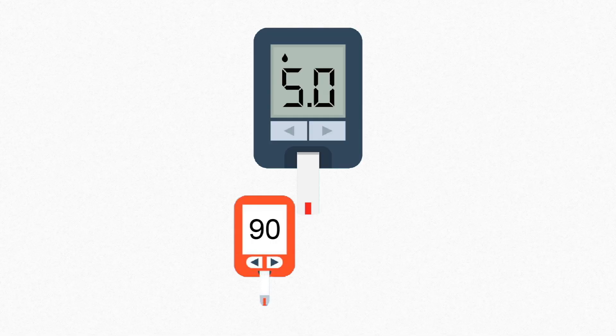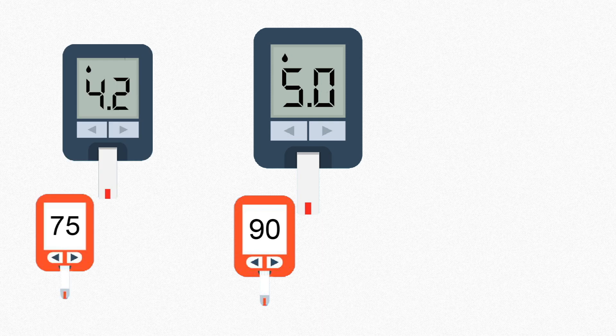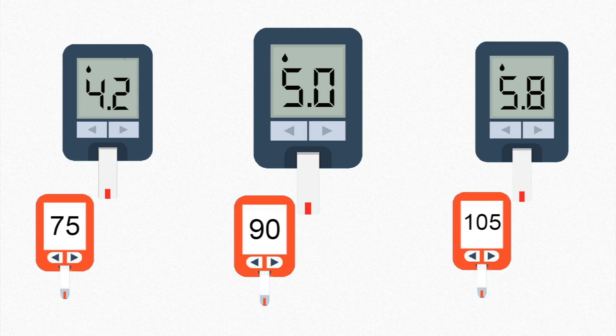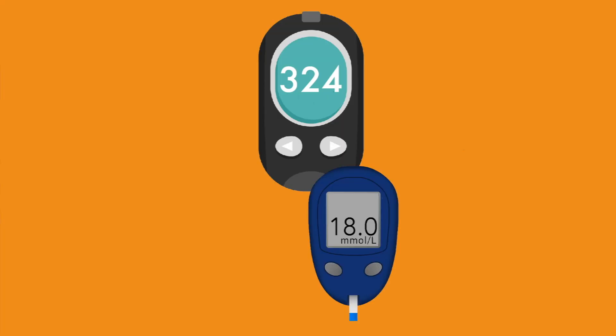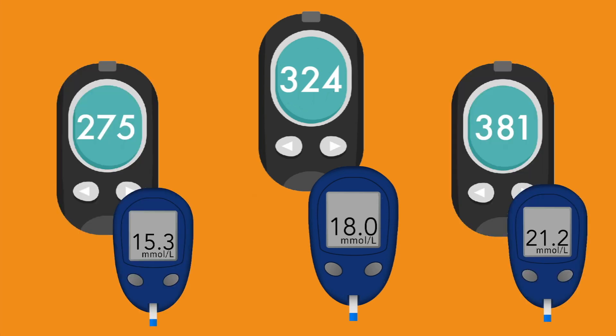So how does ISO define accuracy in blood glucose meters? Let's say you measure your glucose and your meter says that it's 5.0. The margin of error means that your actual glucose can be anywhere between 4.2 and 5.8. This margin of error increases as your glucose is higher or lower. So when your meter says you are 324 milligrams per deciliter, your actual glucose can be anywhere from 275 to as high as 381 milligrams per deciliter.